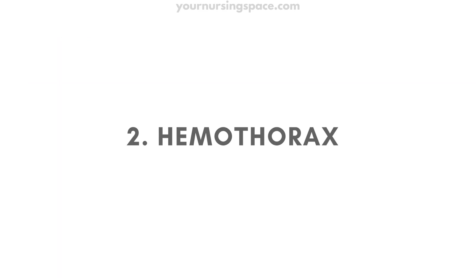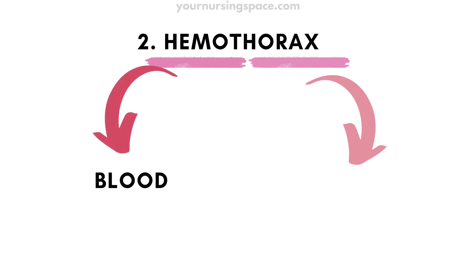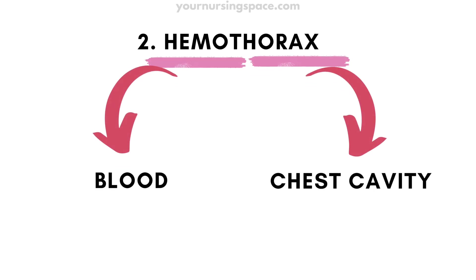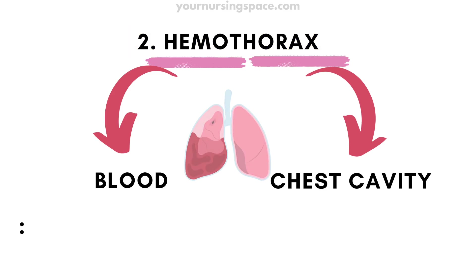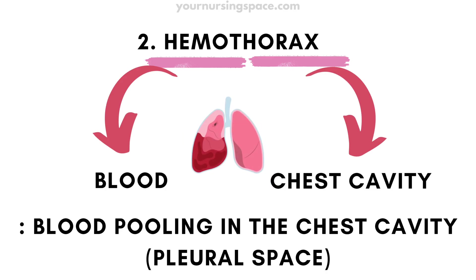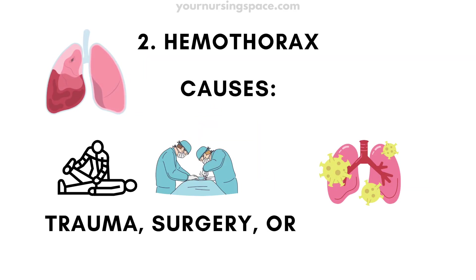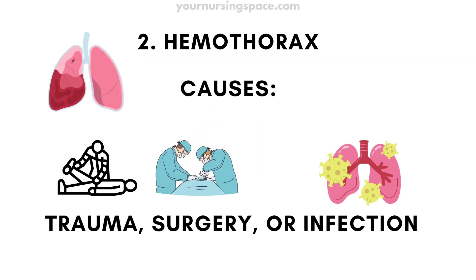Number two: hemothorax. Hemo means blood; thorax still refers to the chest cavity. So hemothorax means blood pooling inside the chest cavity — the pleural space — often from trauma, surgery, or lung infections.